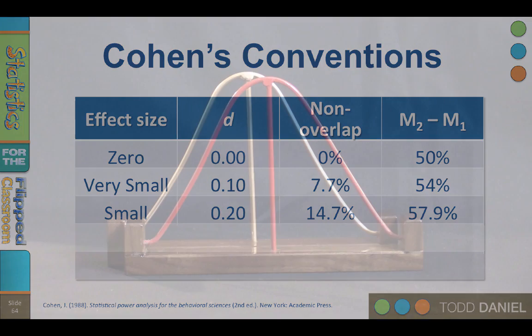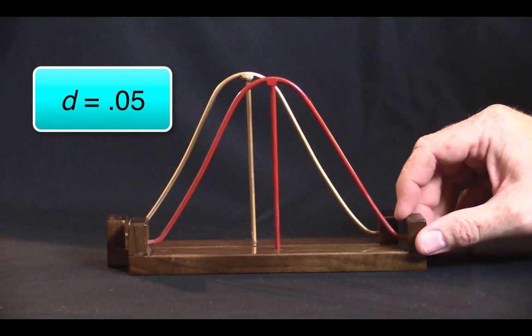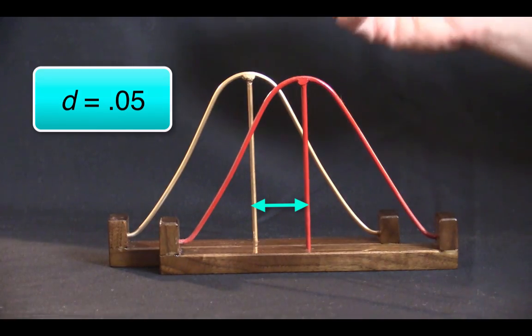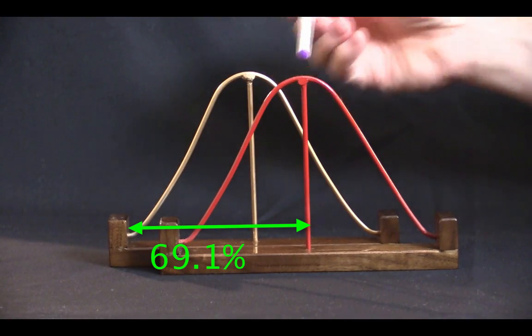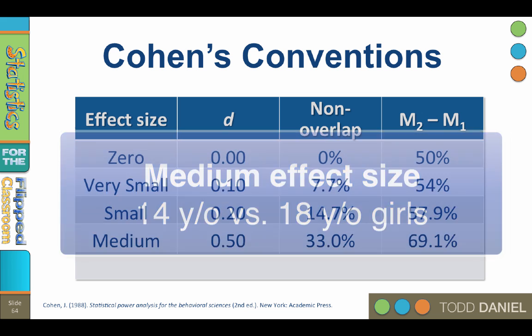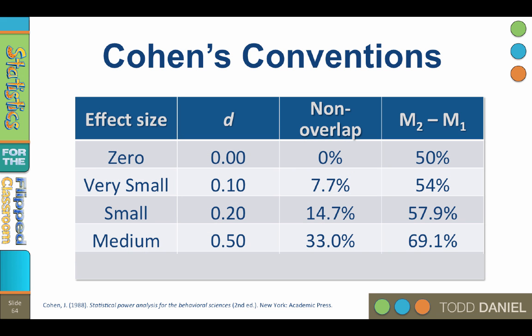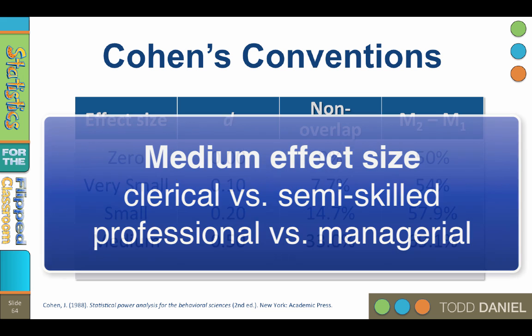A medium effect size is large enough to be seen with the naked eye. When d equals 0.5, there is a 33% non-overlap, and mean 2 is higher than 69.1% of the first distribution. There is a medium effect size for height difference between 14 and 18-year-old girls, so if you have a classroom of 14 and 18-year-old girls mingled together, you should be relatively easily able to tell who is 14 and who is 18 by their height. Cohen says there is also a medium effect size difference in IQ between clerical and semi-skilled workers, or between professional versus managerial occupations.